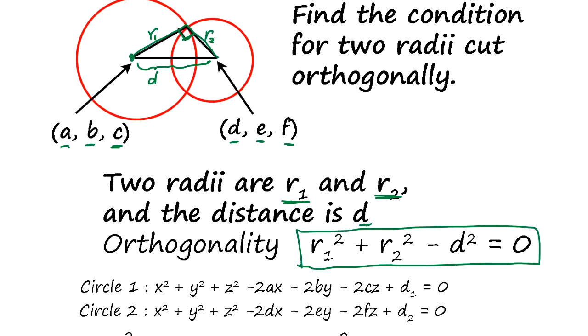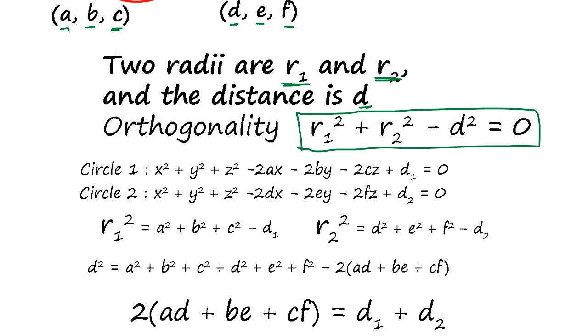R1 square plus R2 square equal D square. This is the Pythagorean theorem. So, this is the condition we have to satisfy.